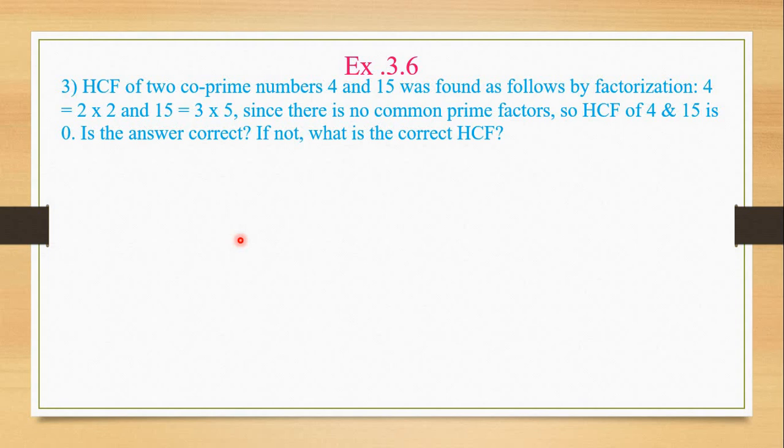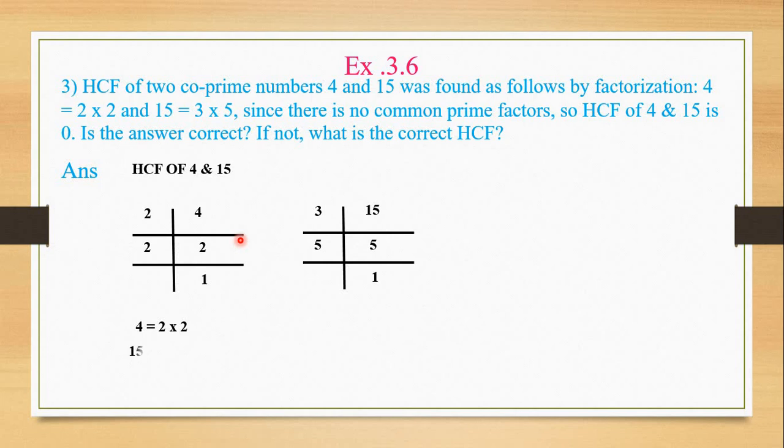Now we have to prove: Is the answer correct? Is it 0? And if not, what is the correct HCF? If nothing is common, I just taught you that if nothing is common, 0 is not the answer. What will it be? Correct, the answer is 1. Still, we have to do the method. We'll begin with finding HCF of 4 and 15. First we do factorization. Factorization of 4: 2 × 2 and 2 × 1. Now we do 15: 3 × 5 and 5 × 1. Now we list both. For 4: 2 × 2, and for 15: 3 × 5. Since there are no common factors, the HCF will be 1.